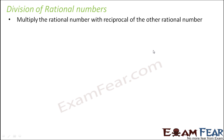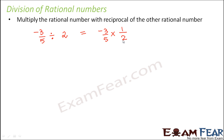Now let us look at division of rational numbers. Dividing a rational number is the same as multiplying it with the reciprocal of the other rational number. For example, minus 3/5 divided by 2 is the same as multiplying minus 3/5 by 1/2 — the reciprocal of 2. Just like subtraction means adding the additive inverse, division means multiplying by the reciprocal. So multiply the numerators: minus 3; multiply the denominators: 10. The answer is minus 3/10.